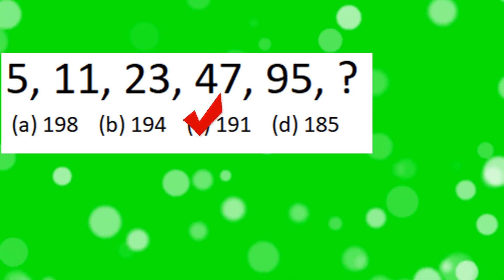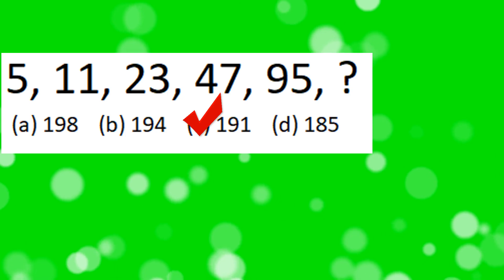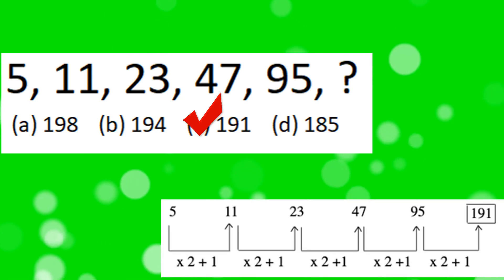The correct answer is option C. This series is based on the pattern: previous number times 2 plus 1 equals next number. Like 5 times 2 plus 1 equals 11, 11 times 2 plus 1 equals 23, and so on.